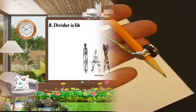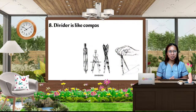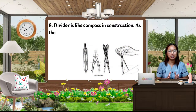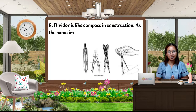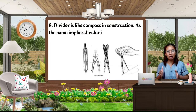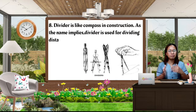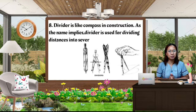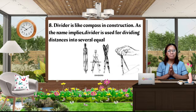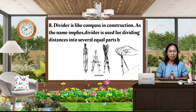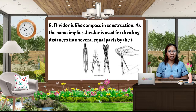We are down to the last part of our discussion, which is the divider. It is a measuring tool. It's like a compass in construction. It is used for dividing distances into several equal parts by the trial and error method.